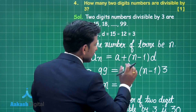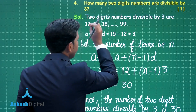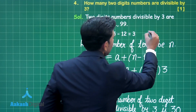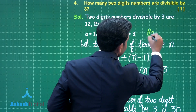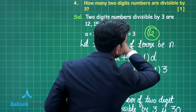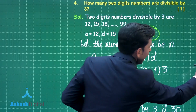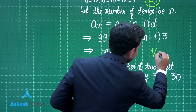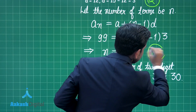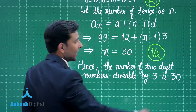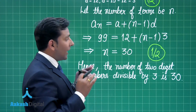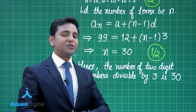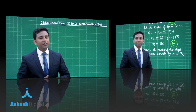This step — when you find the first term and common difference — will provide you half mark for this question, and the value of n will give you the rest half mark. I hope you understood this solution. Now let us proceed to the next question.